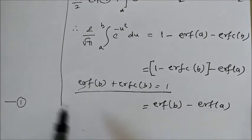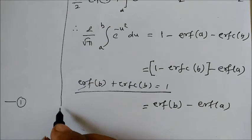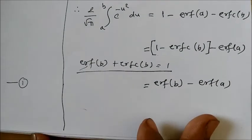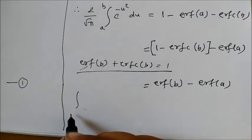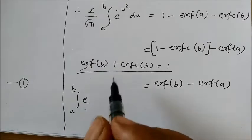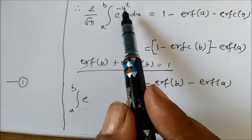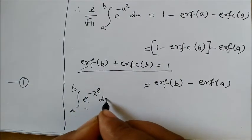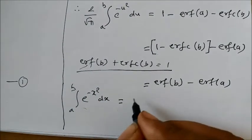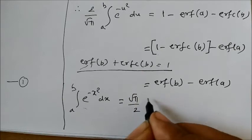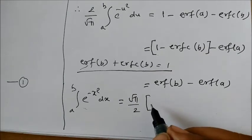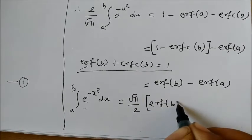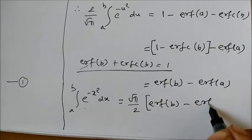And now if I take this over here, I'll finish my proof by writing integral a to b, e to the power minus x square dx, is equal to root pi by 2 into bracket erf of b minus erf of a.